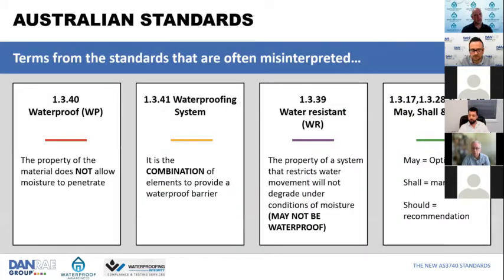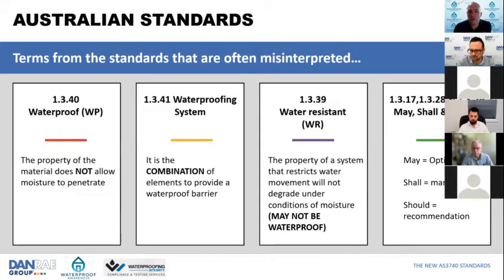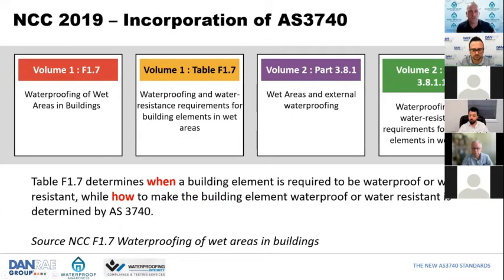The deemed-to-satisfy is the minimum requirements, and a lot of people take that information as gospel. We're in a bit of a trial and error phase with all the technological advances. The NCC is a performance-based code that allows for innovation, but we're seeing more errors than we'd like. The flexibility is great, but awareness through training and understanding is what we need.